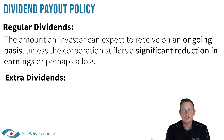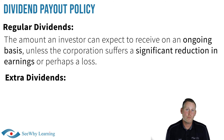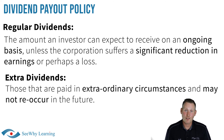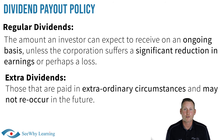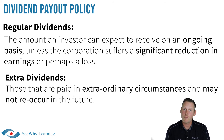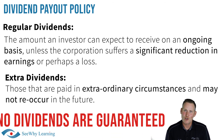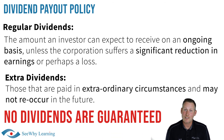Regular dividends are the amount an investor can expect to receive on an ongoing basis unless the corporation suffers a significant reduction in earnings. For example, the policy could be to pay a quarterly dividend of $0.25 per share barring unforeseen circumstances. Extra dividends are those that are paid in extraordinary circumstances, which may not reoccur in the future. For instance, if a company sold off a subsidiary and found itself flushed with cash, it may elect to pay an extra dividend that year. Keep in mind, no dividends, even regular dividends, are guaranteed.